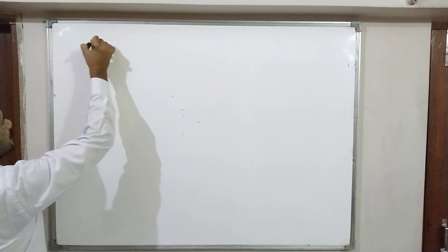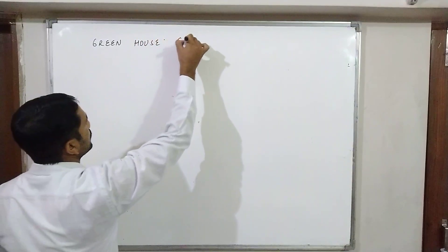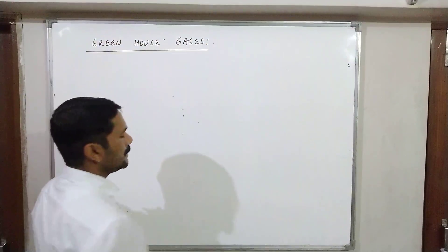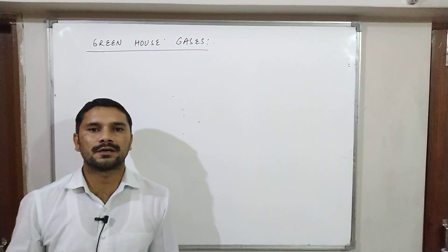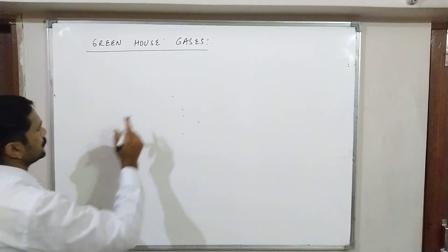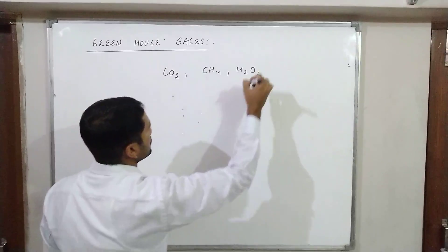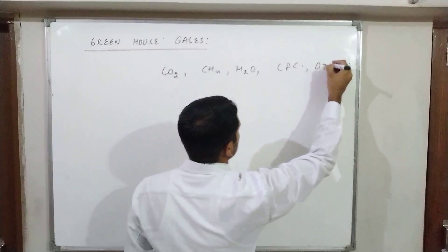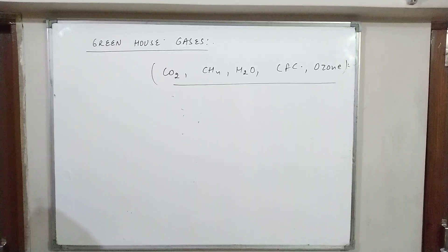Now, some gases in our atmosphere are called greenhouse gases. A common exam question is: 'Which of the following is a greenhouse gas?' The greenhouse gases are: CO2, methane, water vapors, chlorofluorocarbon, and ozone. These are the greenhouse gases responsible for the greenhouse effect seen in our atmosphere.